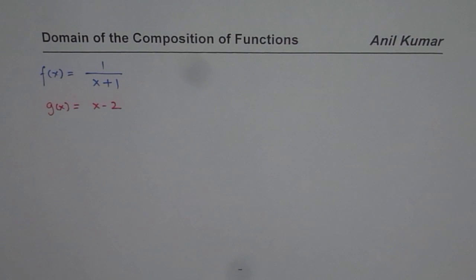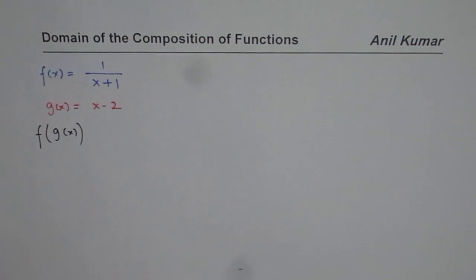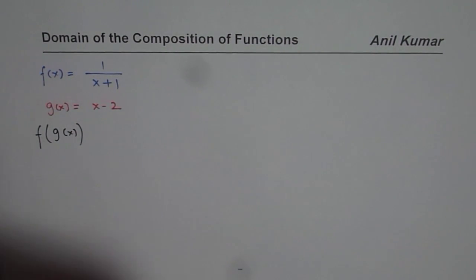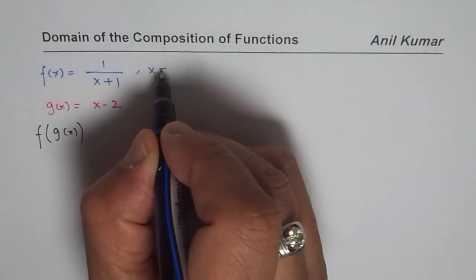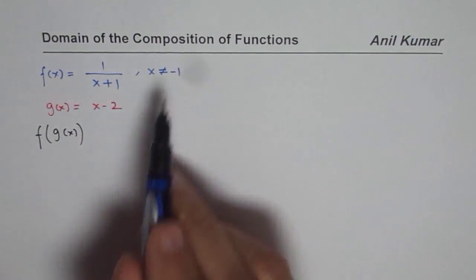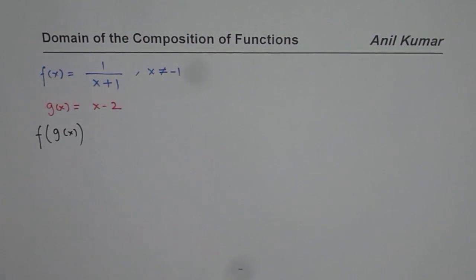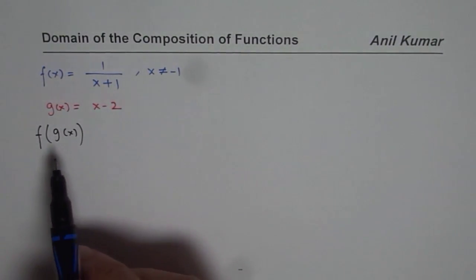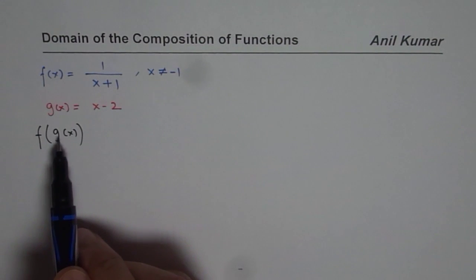Let us consider f of g of x. What do you expect is the domain of that function? For f of x equals 1 over x plus 1, x is not equal to minus 1 — x can be all other real numbers. For g of x equals x minus 2 there is no restriction, x is all real numbers. Now, can you tell me what is the domain of the composition f of g of x?